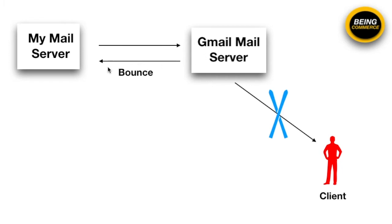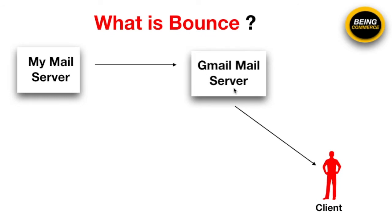In simple words, bounce is when you send your email message to another server and that server forwards your message back to your server instead of delivering it to your client. There are lots of reasons why bounce happens — for example, the Gmail mail server may find that your email is blacklisted or has some other problem, so it returns the message to you instead of delivering it to your client.